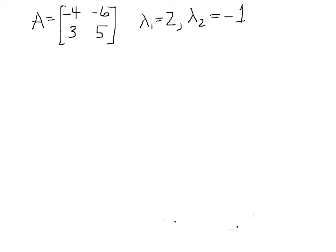In the last video we found that the matrix A with entries negative 4, negative 6, 3, and 5 had eigenvalues 2 and negative 1. The objective of this video is to find out how to determine the eigenspaces, which are spaces of eigenvectors that correspond to these two eigenvalues. Let's start with the first eigenvalue, lambda 1 equals 2.